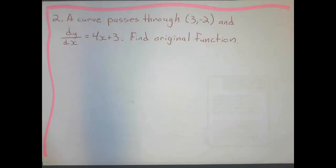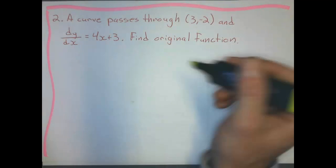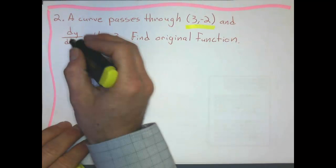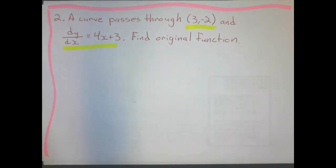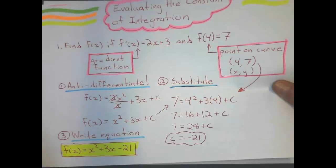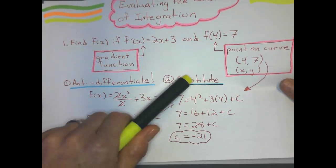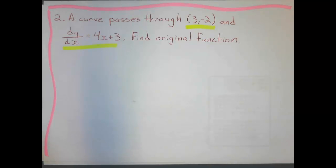Let's look at this example. A curve passes through this point, that's xy. And dy/dx is 4x+3 - that's the gradient function. I want to find the original function. So I go through the same steps: anti-differentiate, substitute, write the equation, and I should be good to go.